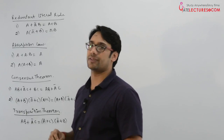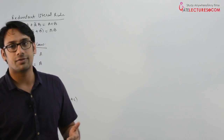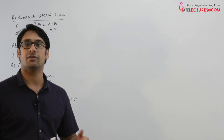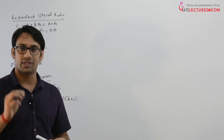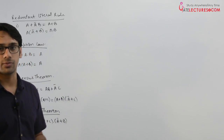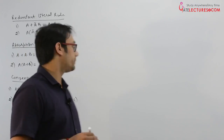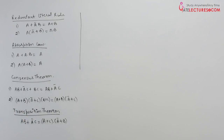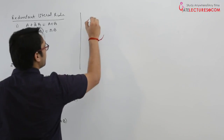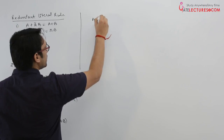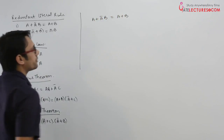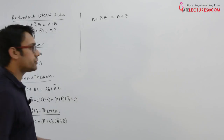There are two ways of proving this kind of theorem. Either we can use the Venn diagram, or we can use the switching algebra expressions, or we can make a truth table. What I will do is I will try to prove these theorems with the help of the truth table. The first theorem is the redundant literal rule: A plus A complement B can be written as A plus B.